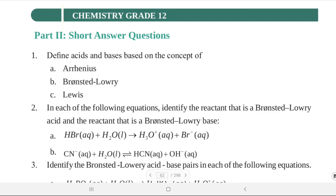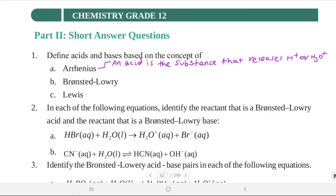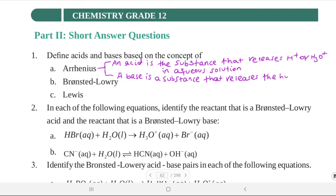By the Arrhenius concept, an acid is a substance that releases hydrogen ion or hydronium ion in aqueous solution. A base is a substance that releases the hydroxide ion in aqueous solution.